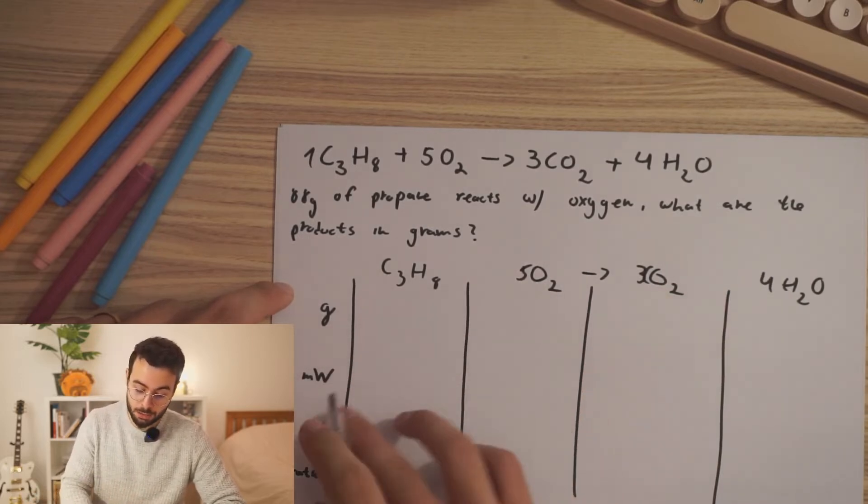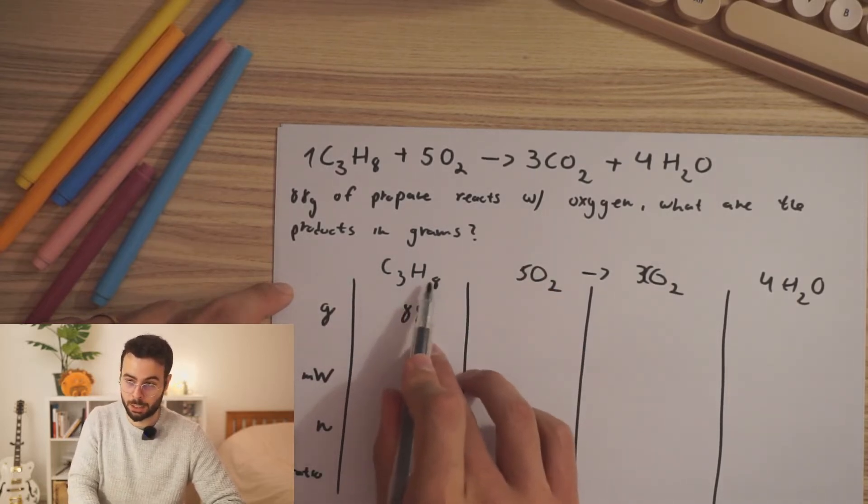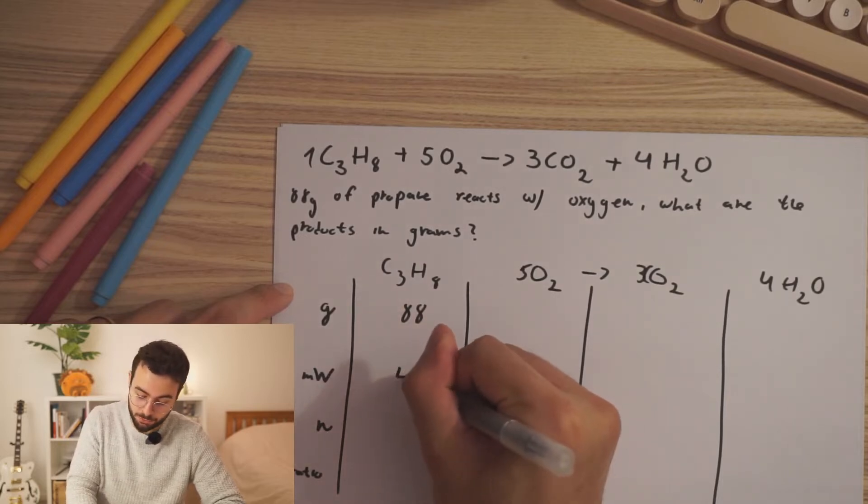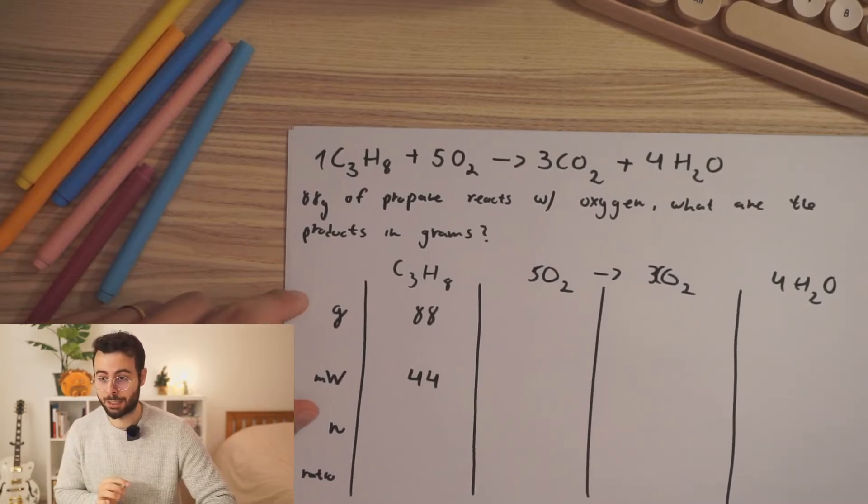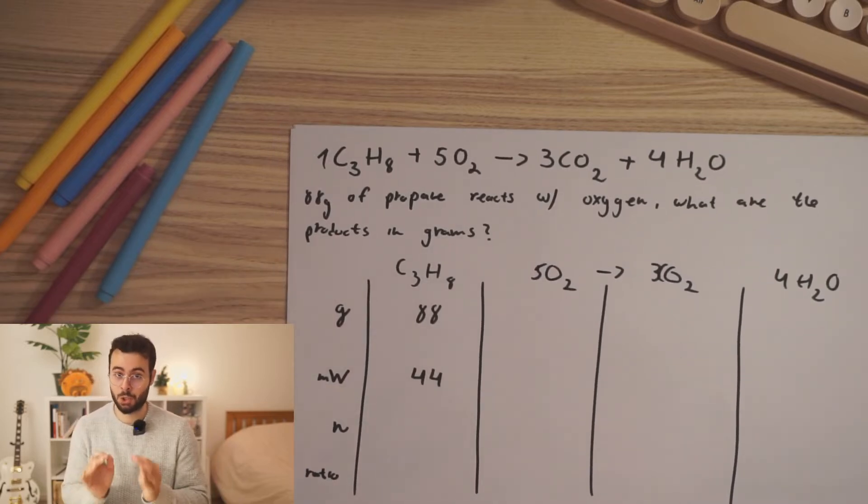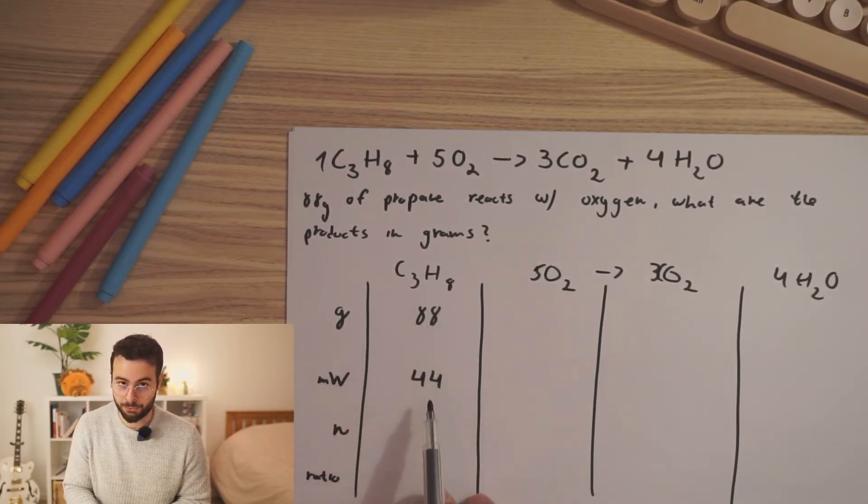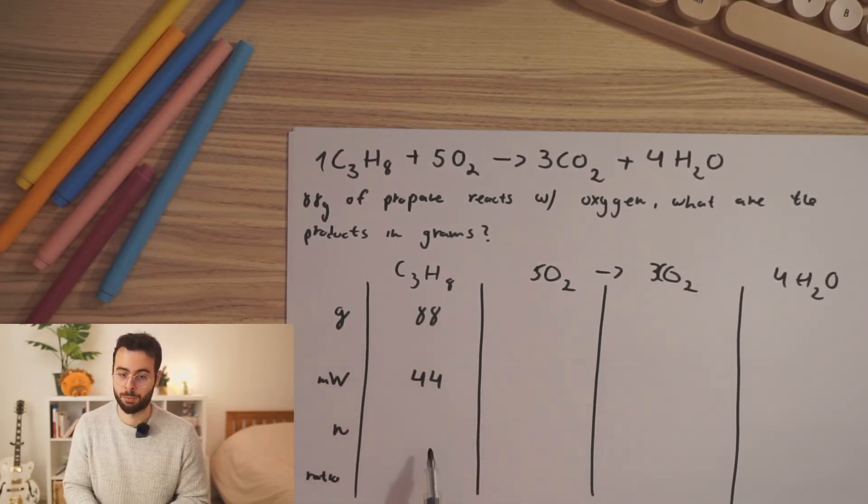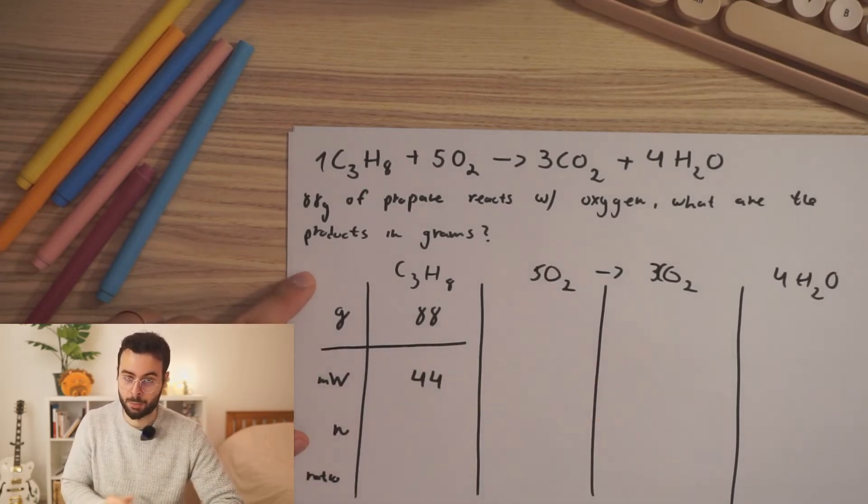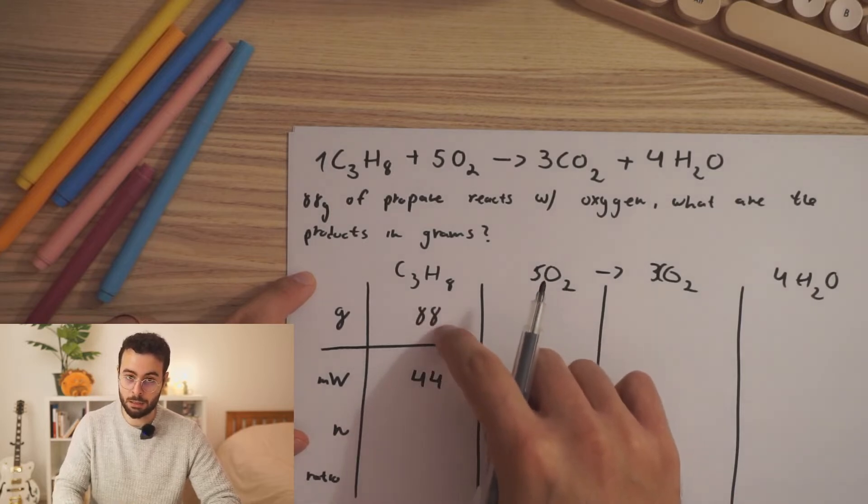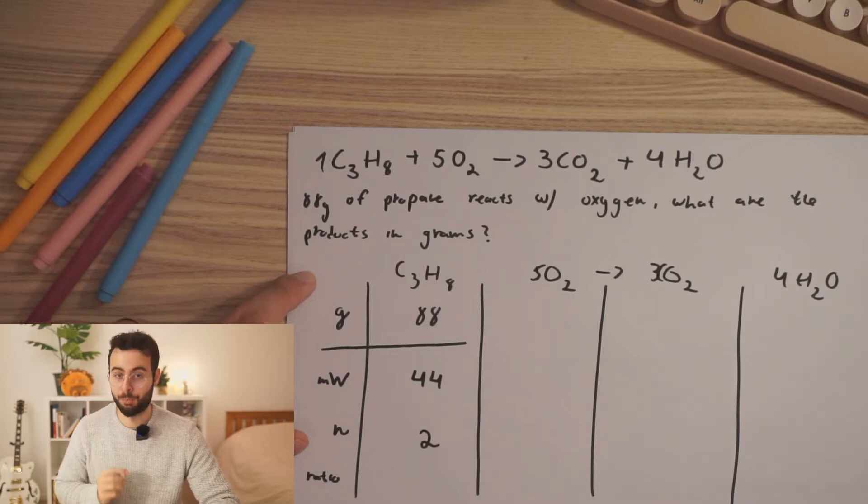So propane, we have 88 grams. And from quickly calculating the molecular weight, we know it's 44 grams per mole. It means that if we want to find the moles using the following table, check this out, we can do 88, this number divided by 44 will give us the number of moles. So grams divided by molecular weight will give us the number of moles. So 88 divided by 44 will give us 2 moles of propane.